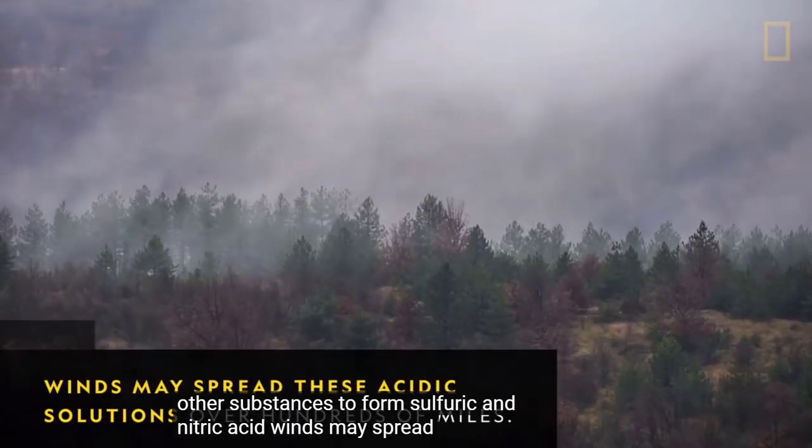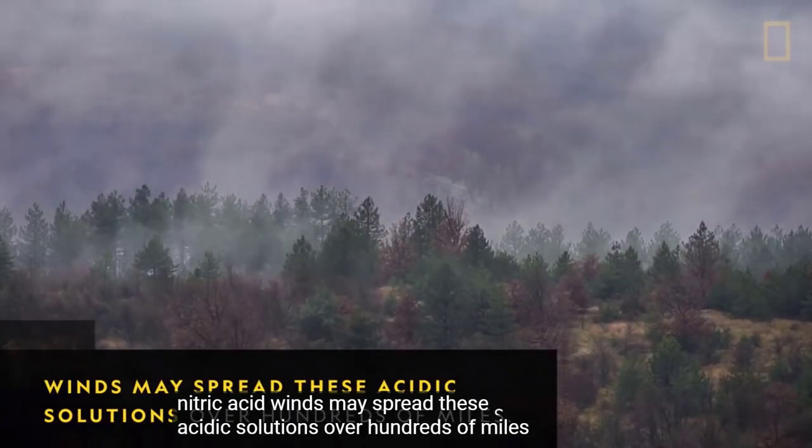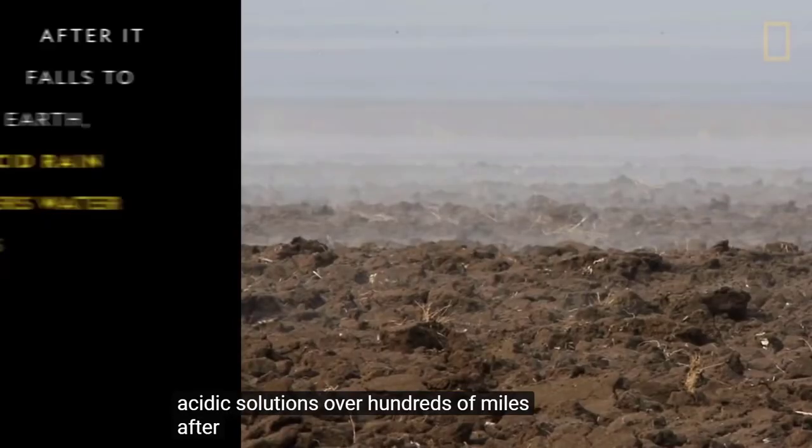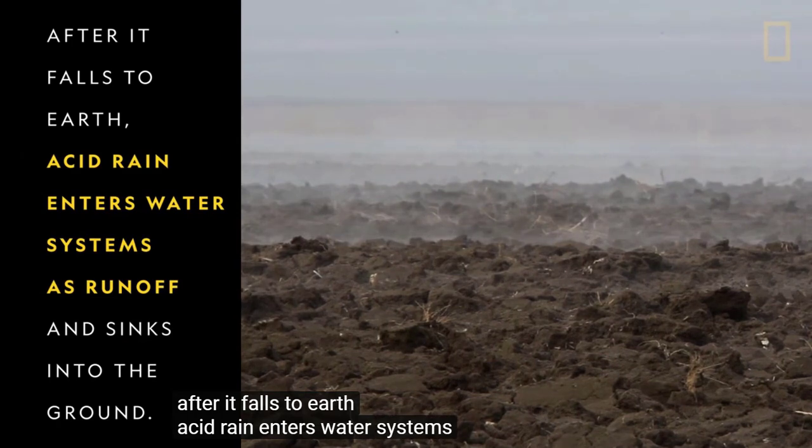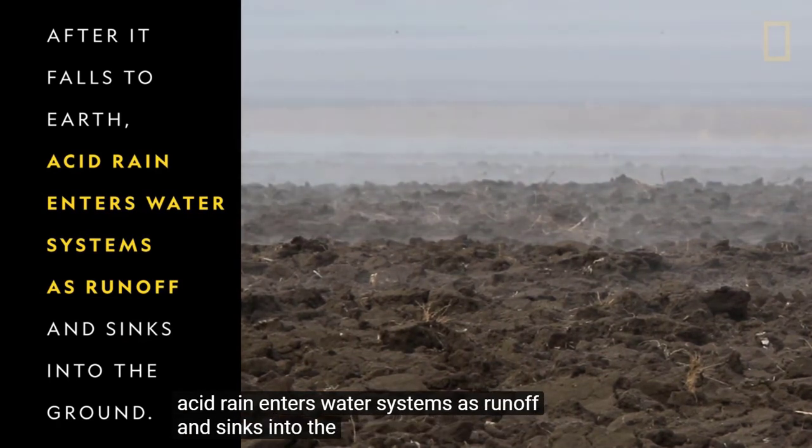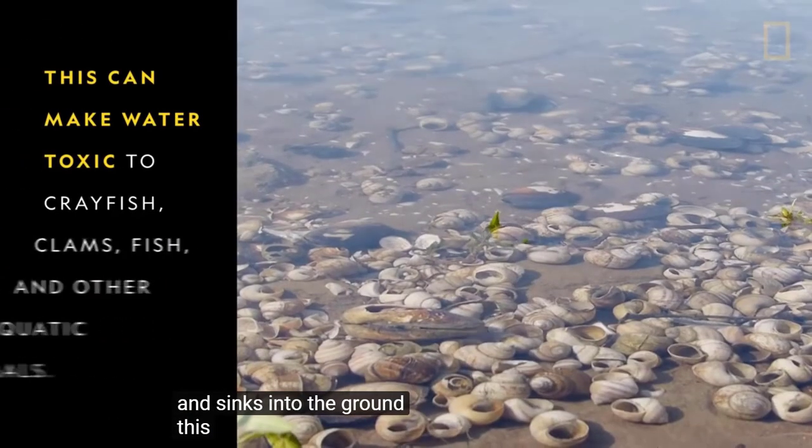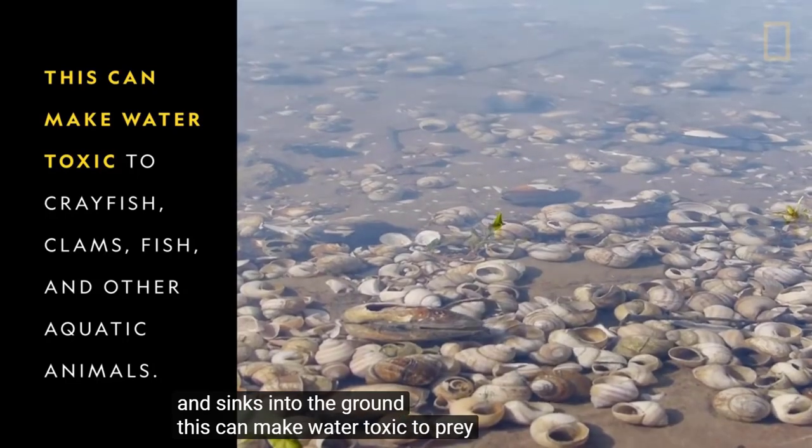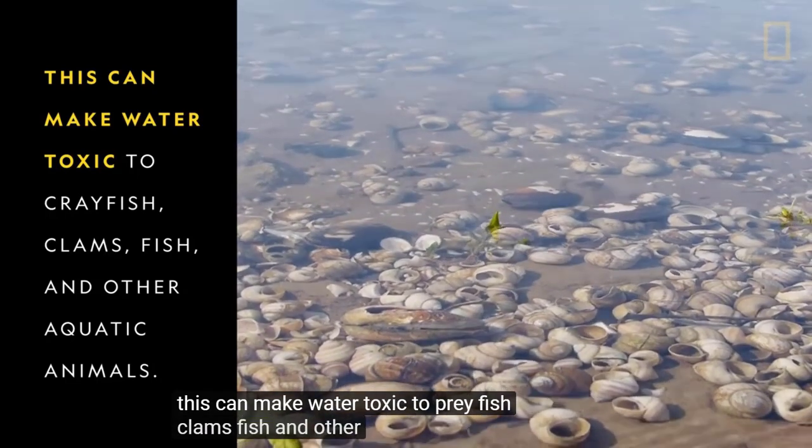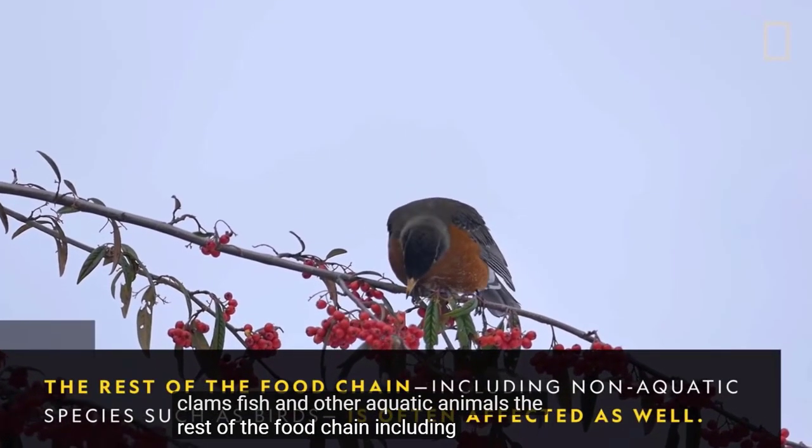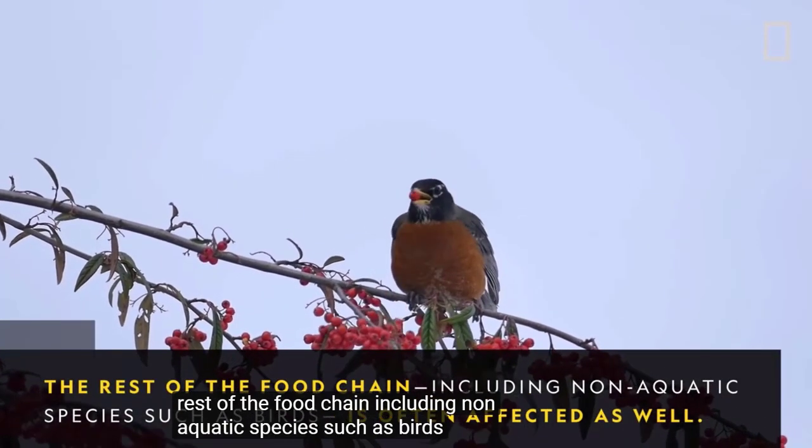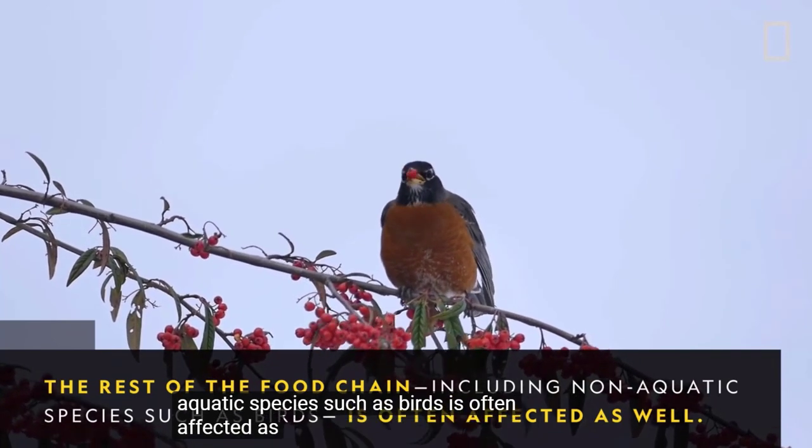Winds may spread these acidic solutions over hundreds of miles. After it falls to earth, acid rain enters water systems as runoff and sinks into the ground. This can make water toxic to crayfish, clams, fish, and other aquatic animals. The rest of the food chain, including non-aquatic species such as birds, is often affected as well.